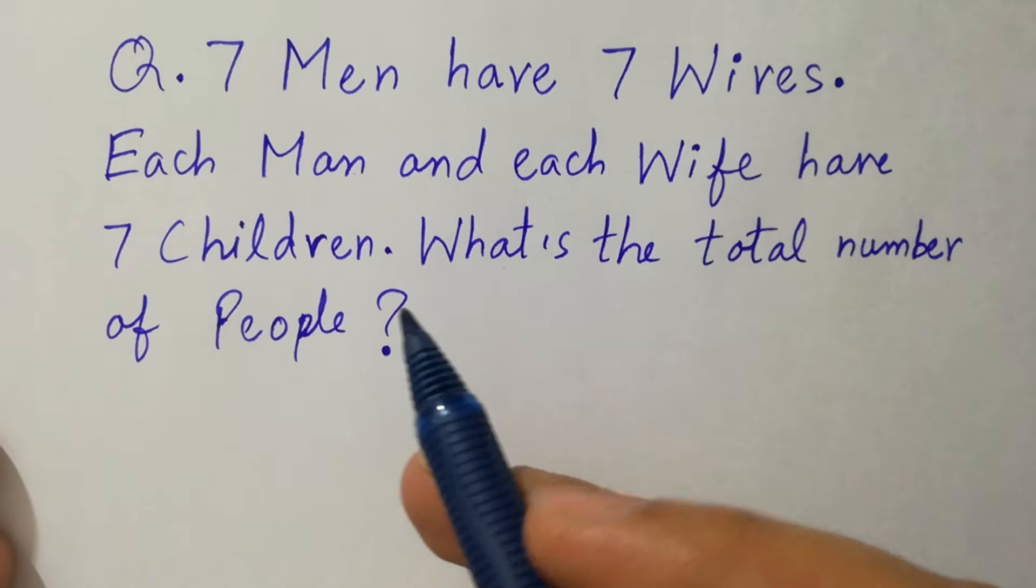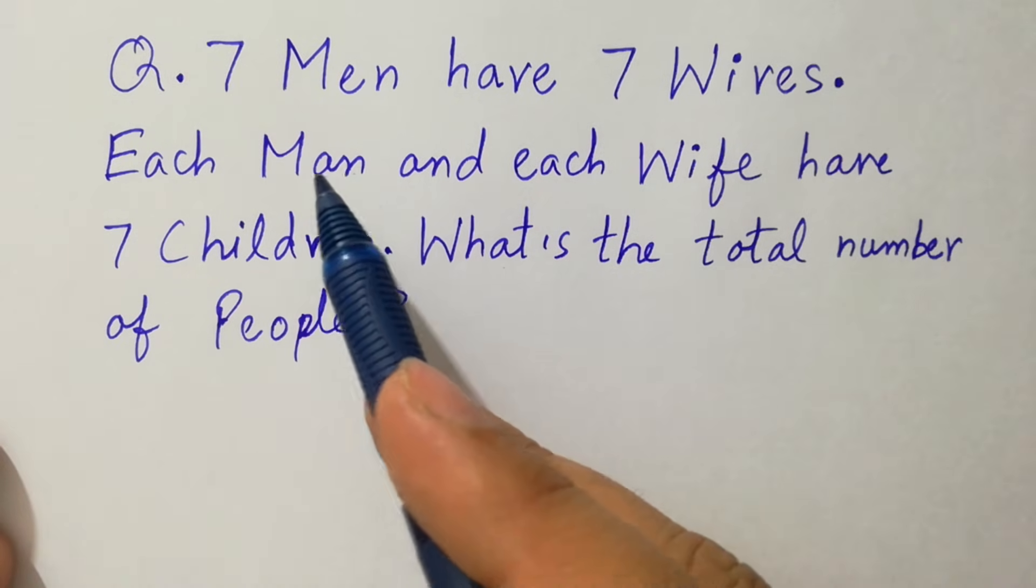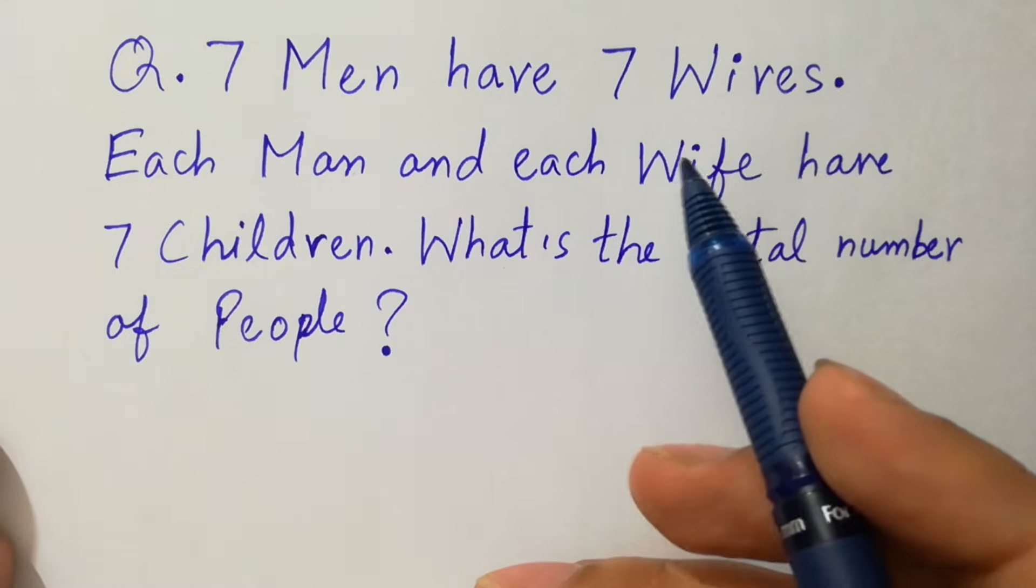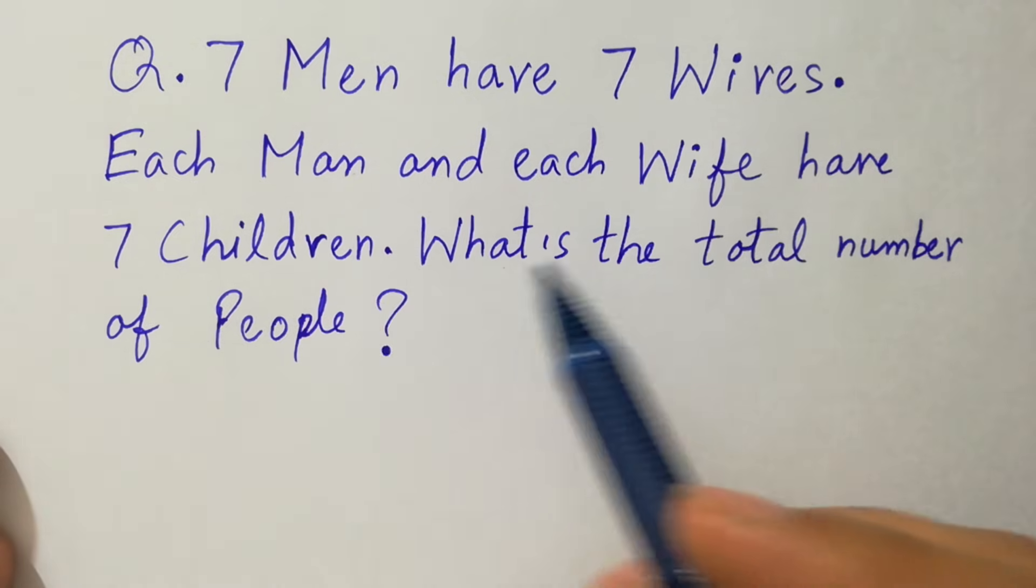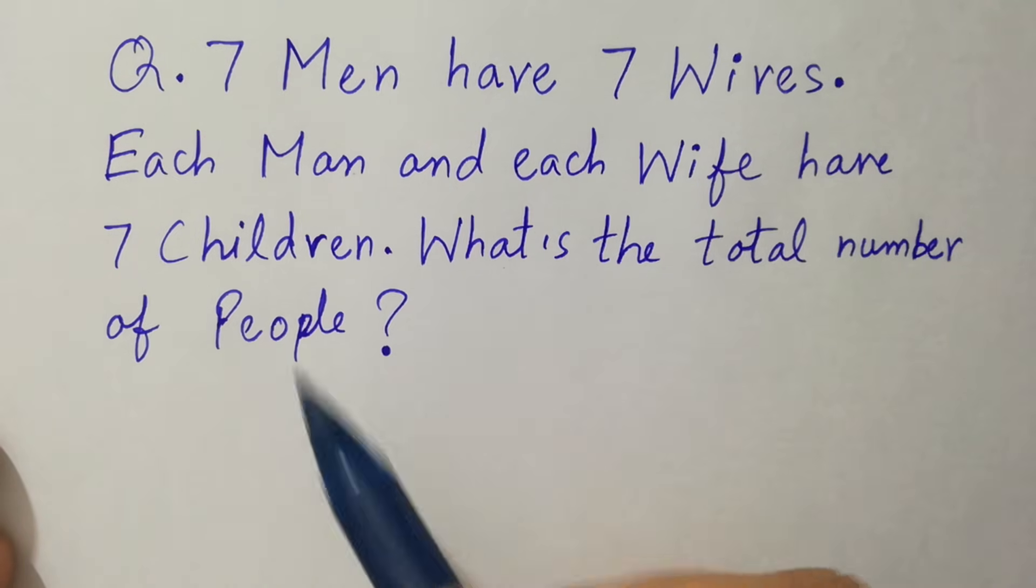Hello friends, we have a question here. Seven men have seven wives. Each man and each wife have seven children.